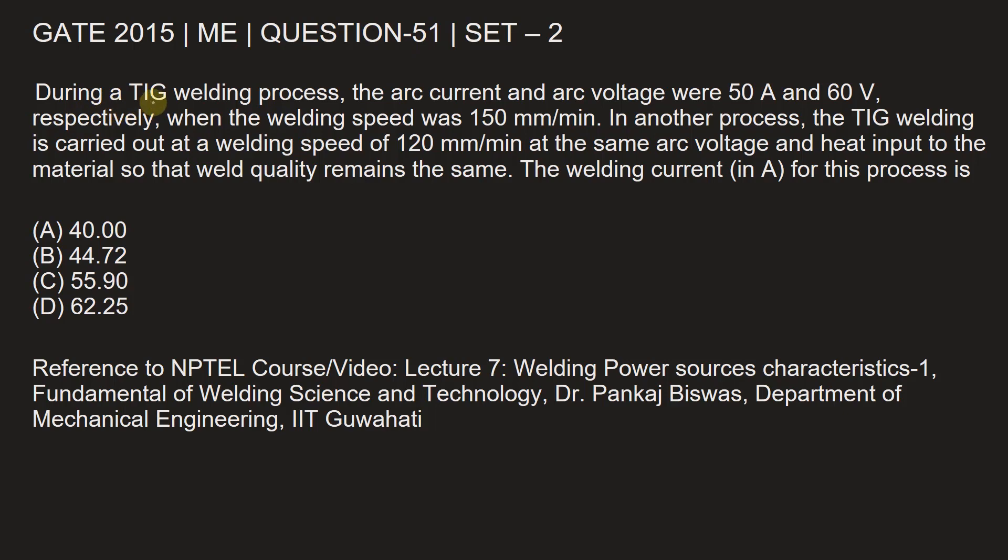During a TIG (tungsten inert gas) welding process, the arc current and arc voltage were 50 ampere and 60 volt respectively when the welding speed was 150 millimeters per minute. In another process, the TIG welding is carried